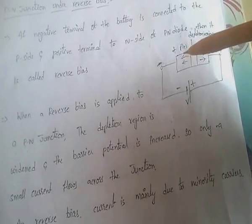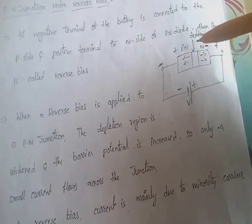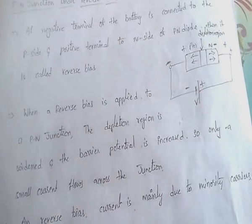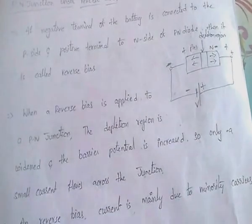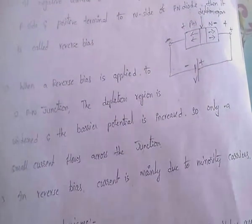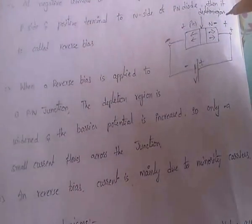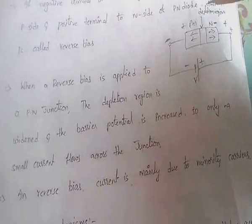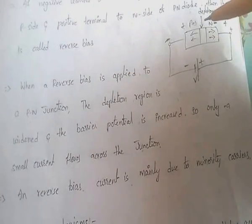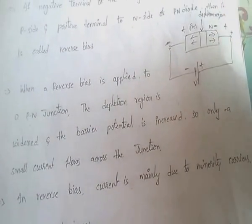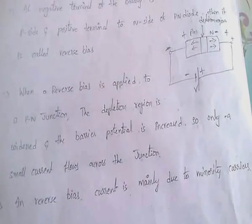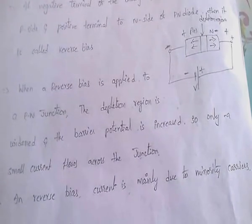Only a small amount of current flows through the junction under reverse bias. This reverse bias current is mainly due to the minority carriers.